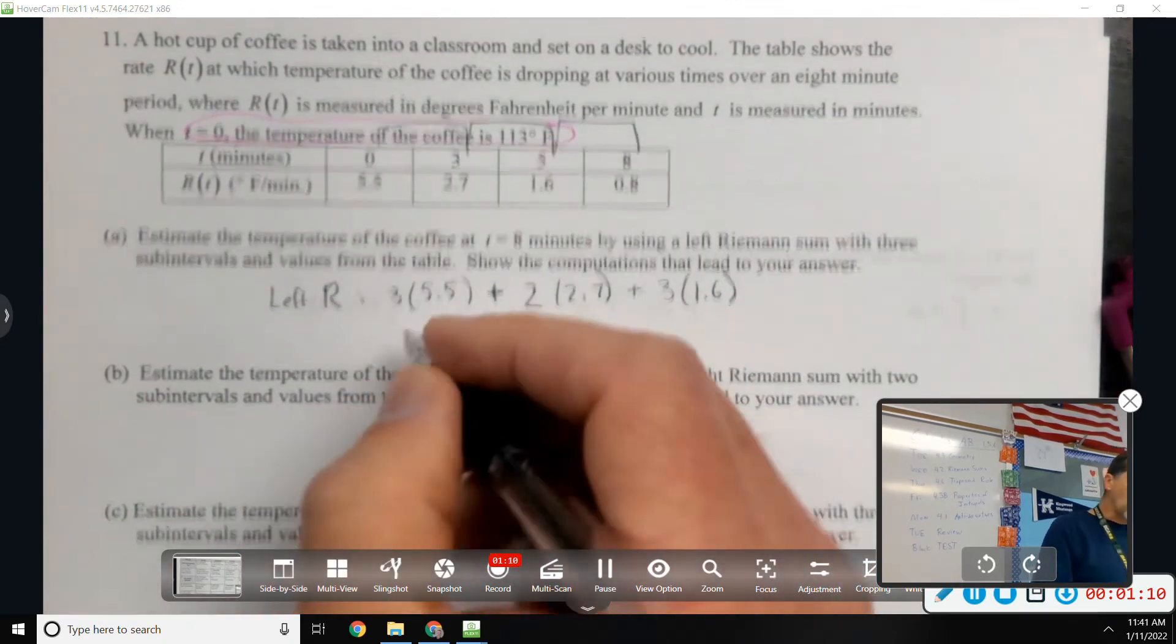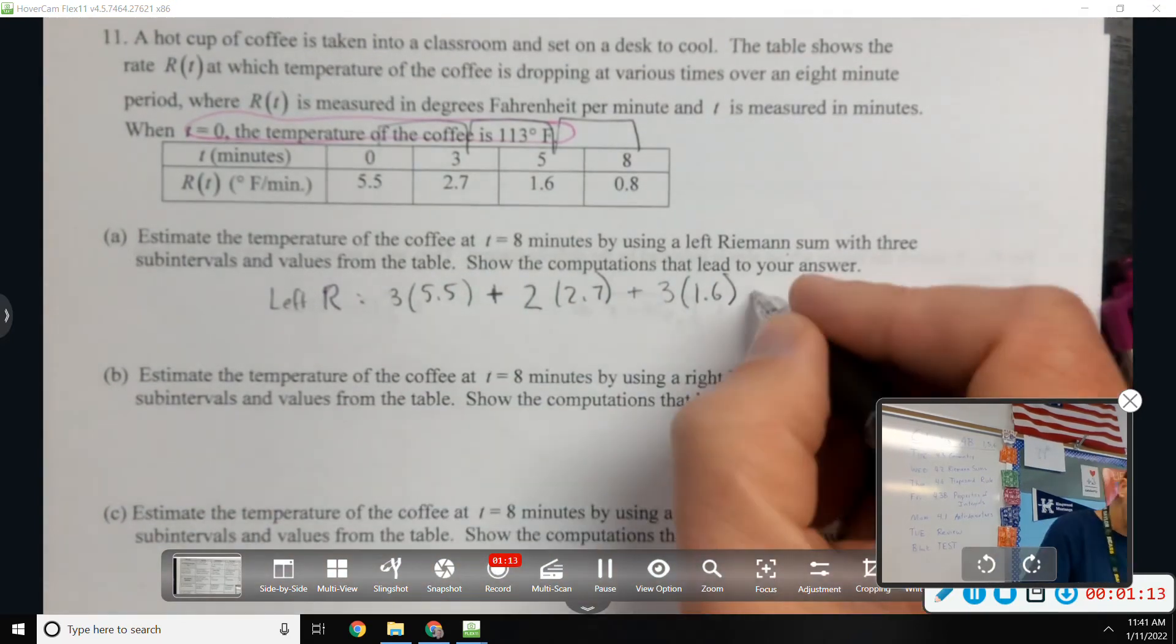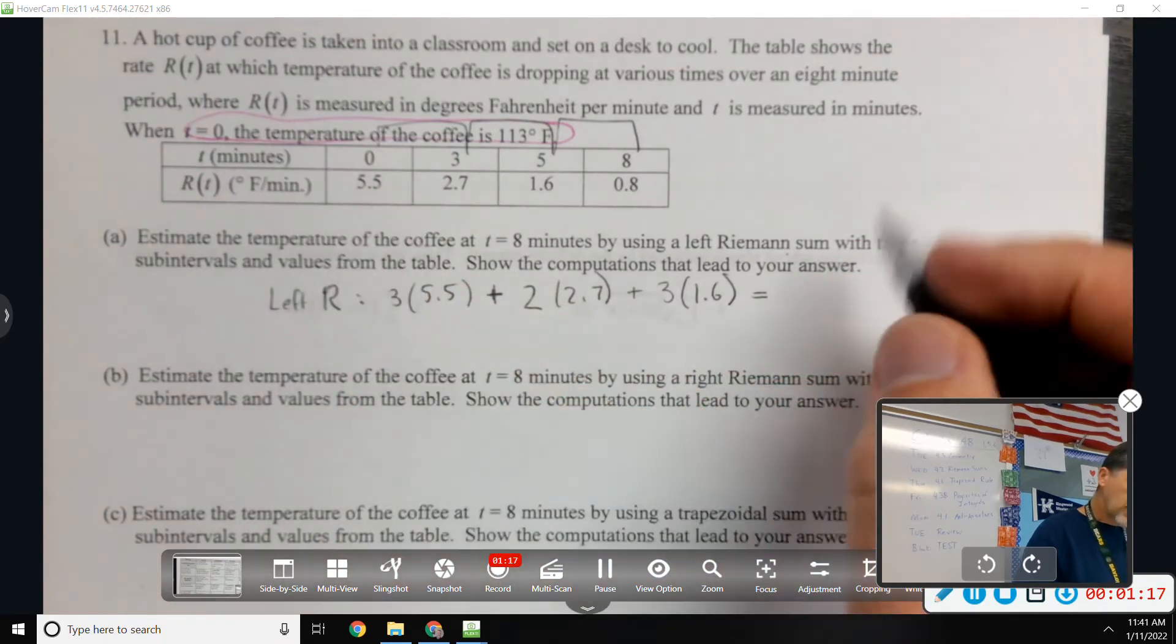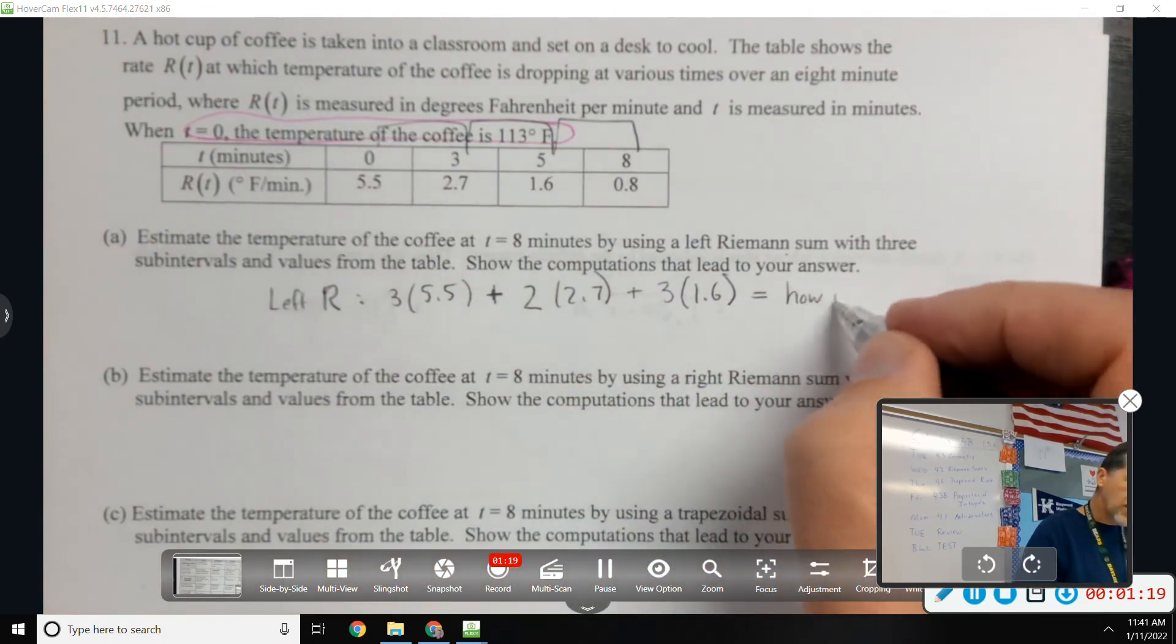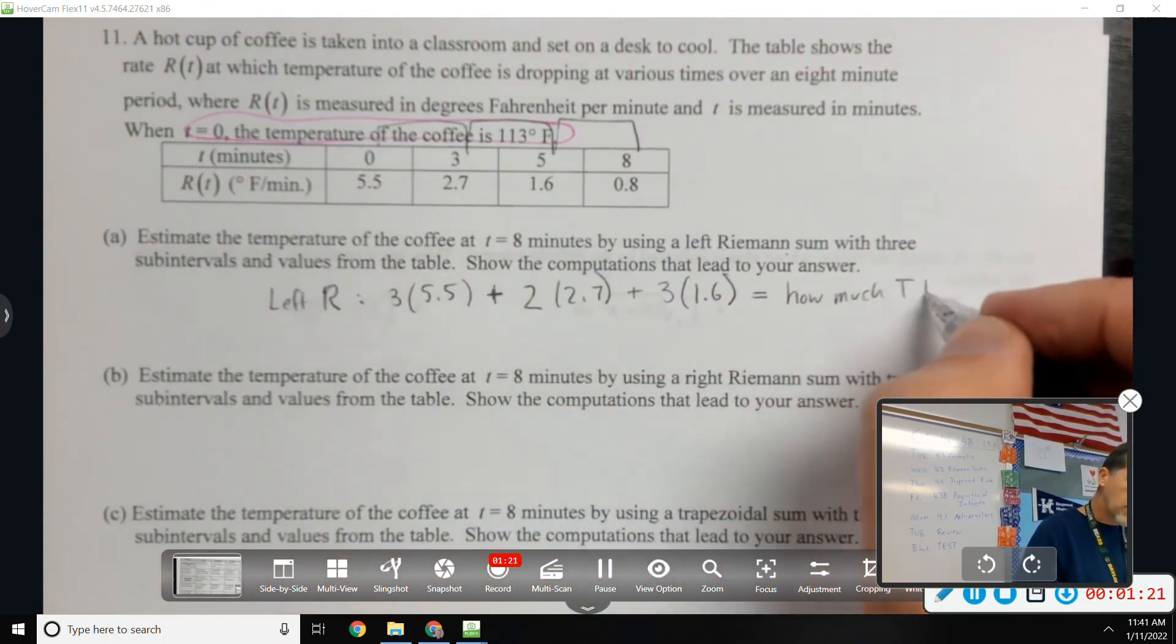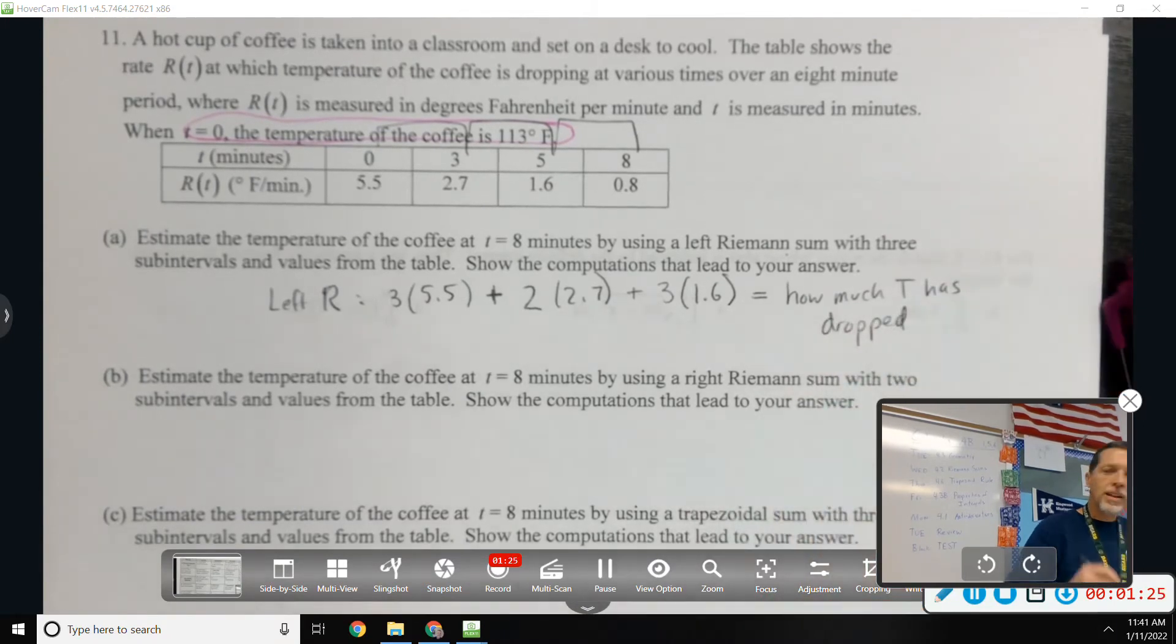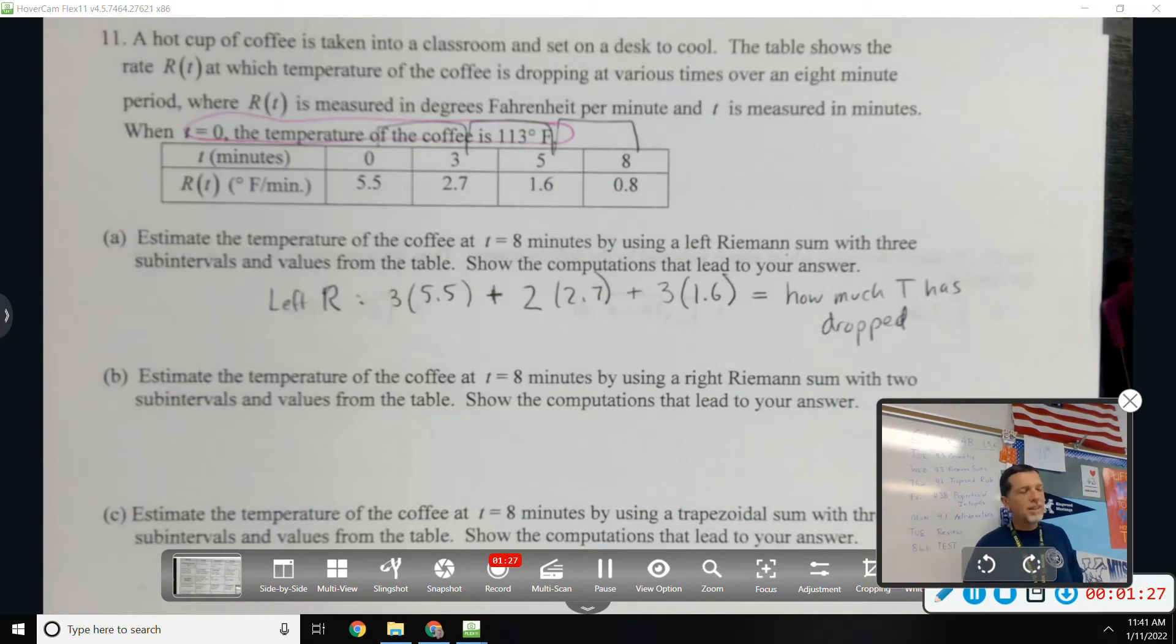Now, once I calculate all that, that tells me how much it's dropped. That tells me the total amount T has dropped. But the question was, estimate the temperature of the coffee. So you just take the answer and add it or subtract it? Subtract 113 minus how much T has dropped.